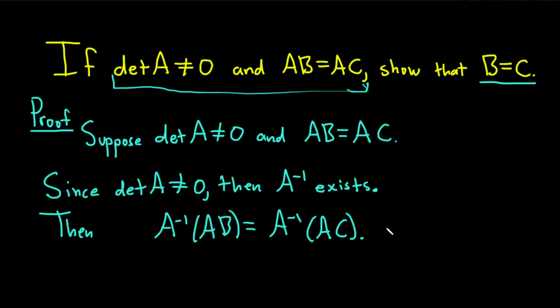So then we have A inverse times AB equals A inverse times AC. But matrix multiplication is associative. So I'm going to say it. So since matrix multiplication is associative,